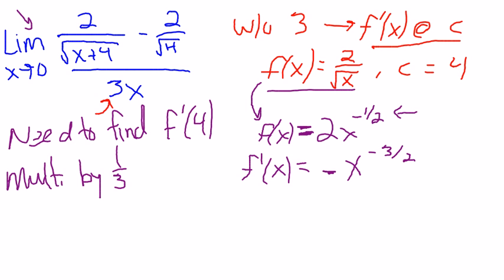From there, I can do f prime of 4, which is negative 1 over 4 to the 3 over 2. You need to know that 4 to the 3 over 2 is square root of 4 cubed. So square root of 4 is 2, 2 cubed is 8.